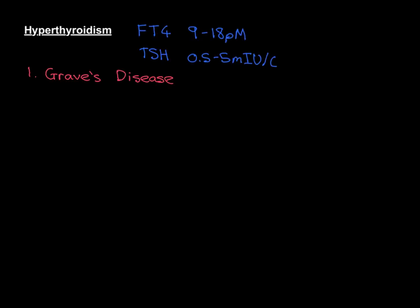What happens in Graves' disease? Unfortunately, the immune system starts manufacturing antibodies that can bind to the receptor for thyroid-stimulating hormone. Remember the physiology — thyroid-stimulating hormone tells the cells of the thyroid gland to produce and release T4 into the bloodstream. In order to do that, it has to bind to a receptor on the surface of those thyroid cells.